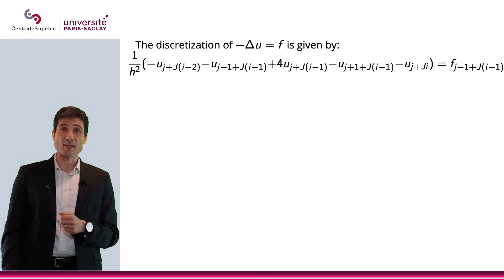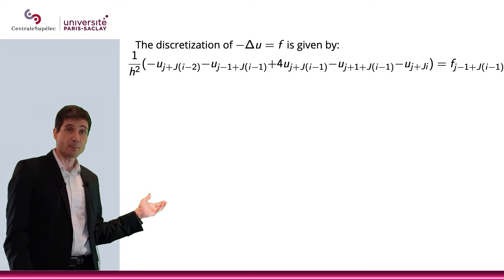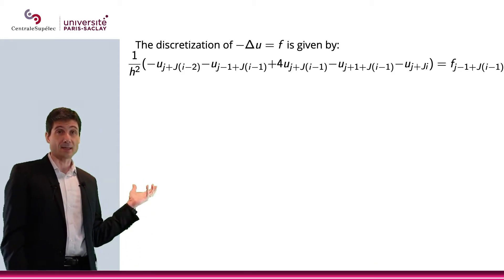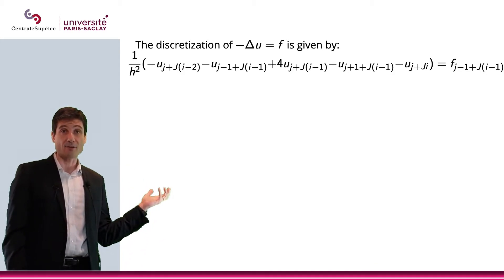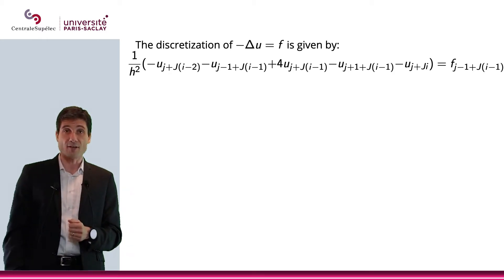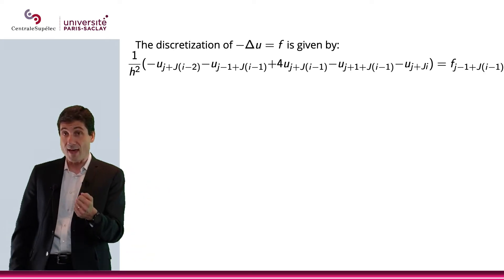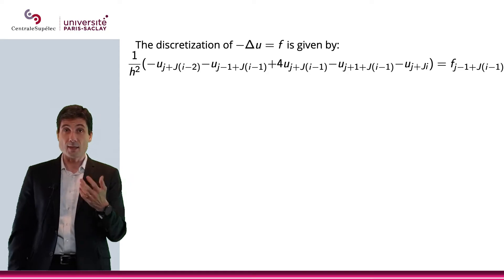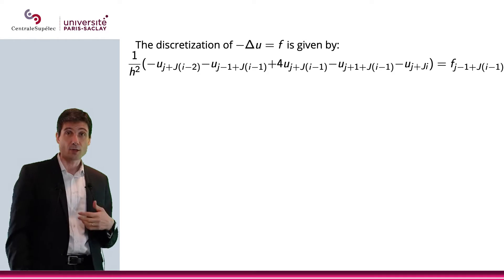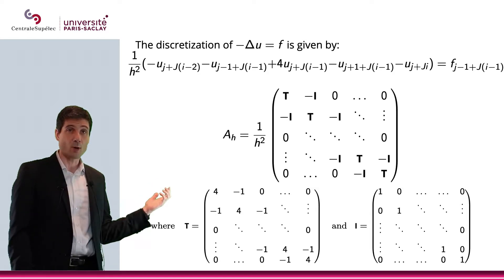So here is the discretization of the Laplace operator. Minus Laplace u equals f will be replaced by this discretization. On the left-hand side, what we have is the approximation discussed in the previous video, thanks to the five-point stencil. On the right-hand side, we have the value of f at the point of the grid, and we simply number the component of the vector using only one index.